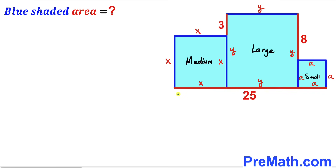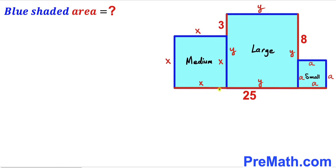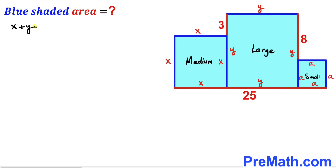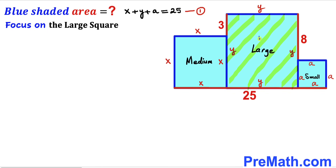Now let's make an observation. We can see that this whole horizontal distance is 25 units, and this horizontal distance is the sum of three individual segments: x plus y plus lowercase a. So therefore, x plus y plus lowercase a equals 25. I'm going to label this as equation number one.